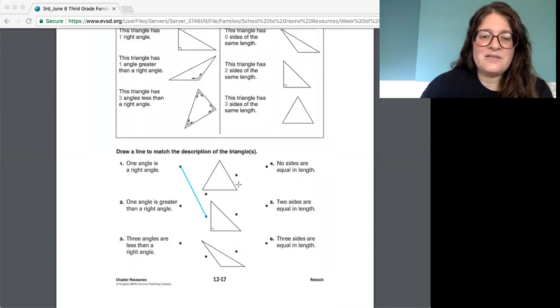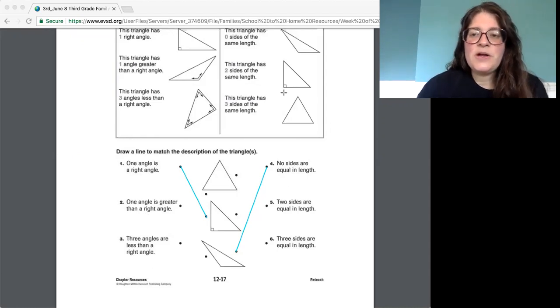And if I go over here no sides are equal in length. Well I look here oh those are all equal. This one looks like it has two of them that are equal but this one definitely there's a really short one a little bit of a longer one and a really long one. So I think that this is the one that matches no sides are equal in length. And then you're just going to go and do those the next questions and if you get confused look up here and it'll tell you what to do and which one it will match.